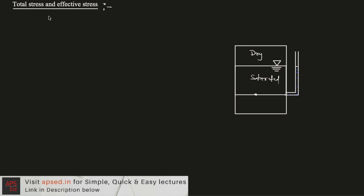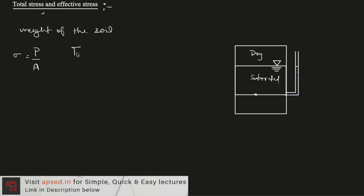Here we are trying to understand the stress developed at a point in the soil mass due to the weight of the soil. We know the basic formula for stress: sigma is the stress, and it is given as total load divided by total area. So total stress is nothing but the load divided by the area.